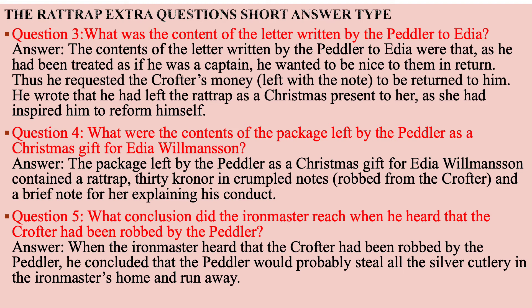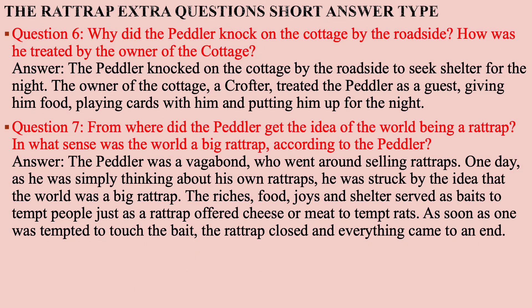Question number five: What conclusion did the Iron Master reach when he heard that the crofter had been robbed by the peddler? Answer: When the Iron Master heard that the crofter had been robbed by the peddler, he concluded that the peddler would probably steal all the silver cutlery in the Iron Master's home and run away. Question number six: Why did the peddler knock on the cottage by the roadside?